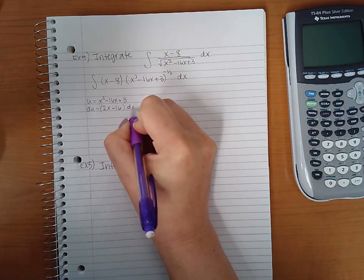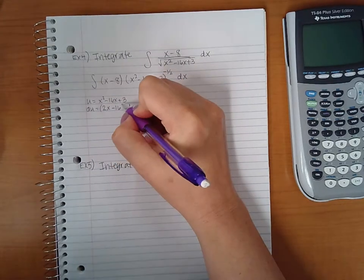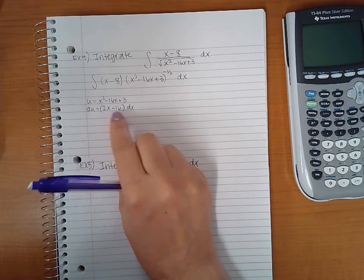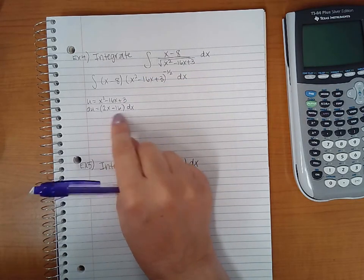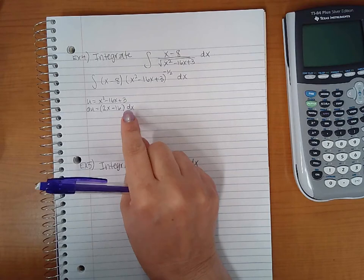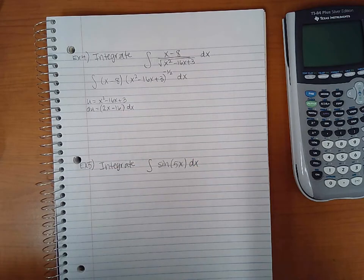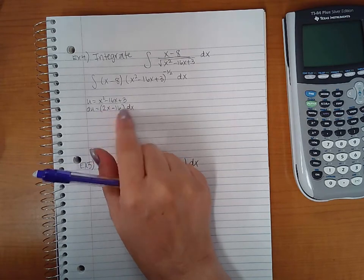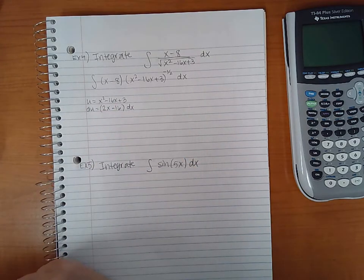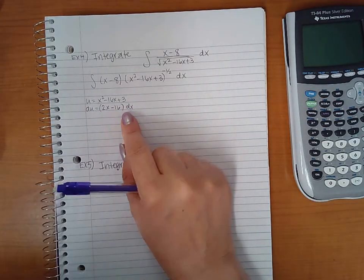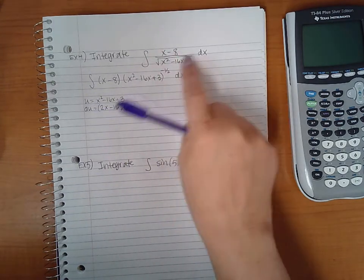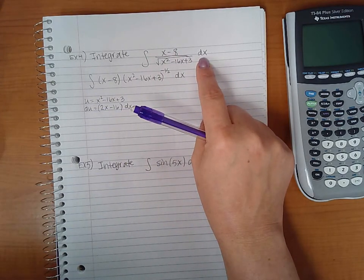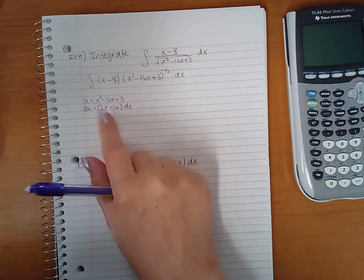I have two terms here, so I put them in parentheses so that the dx applies to both, instead of writing 2x dx minus 16 dx. That's helpful because here there's only one dx, not two.